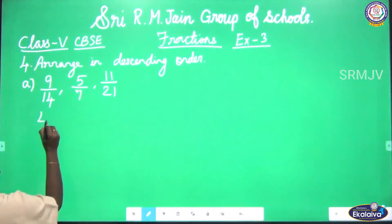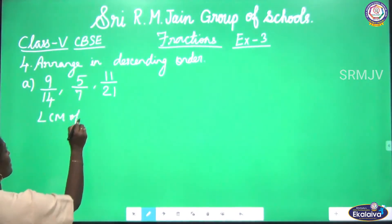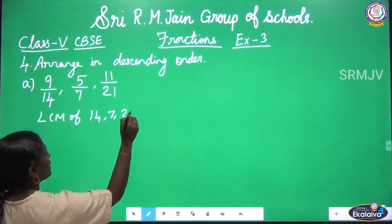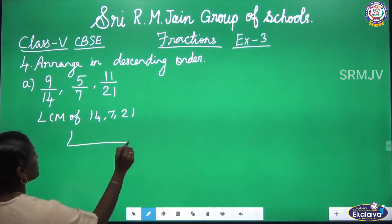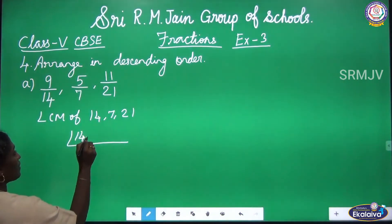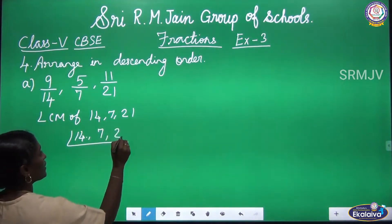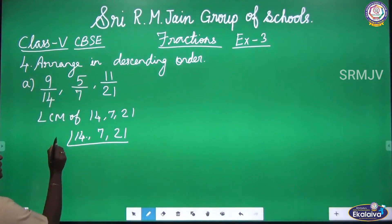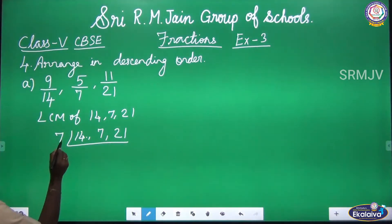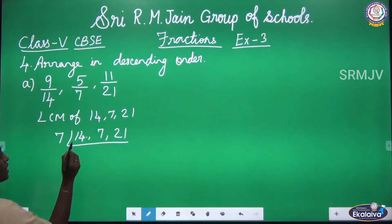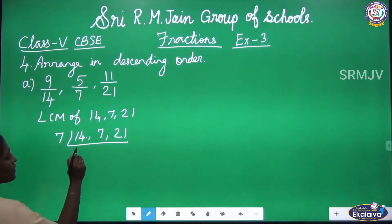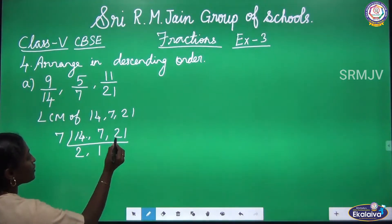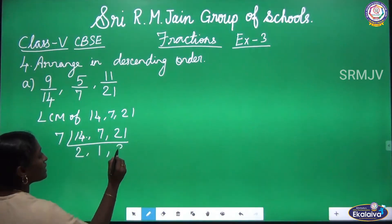Now we are going to find the LCM of denominator numbers 14, 7, and 21 by L division method. All 3 numbers are divisible by 7. Since 7 is a prime number, we divide by 7: 14 divided by 7 is 2, 7 divided by 7 is 1, and 21 divided by 7 is 3.